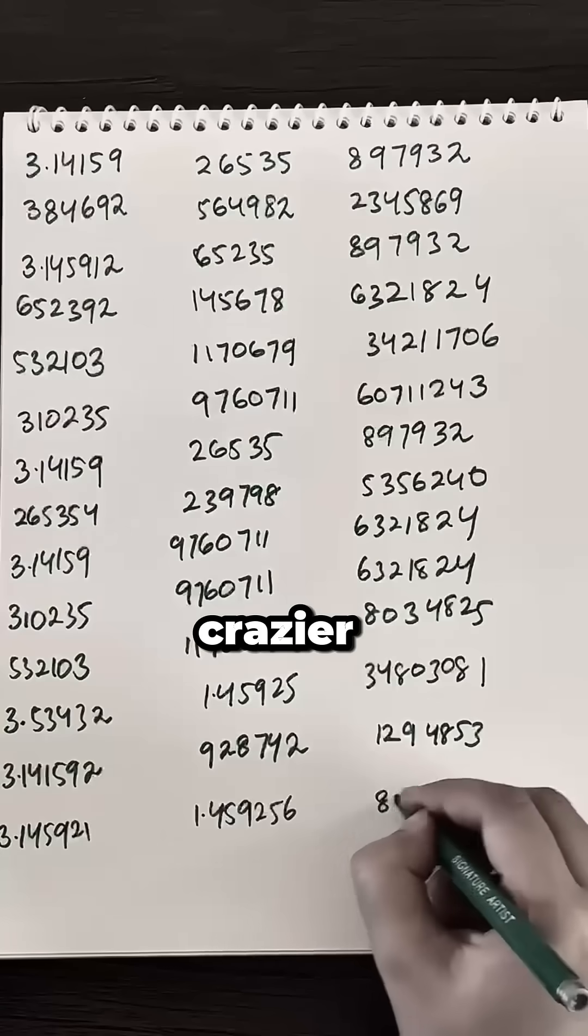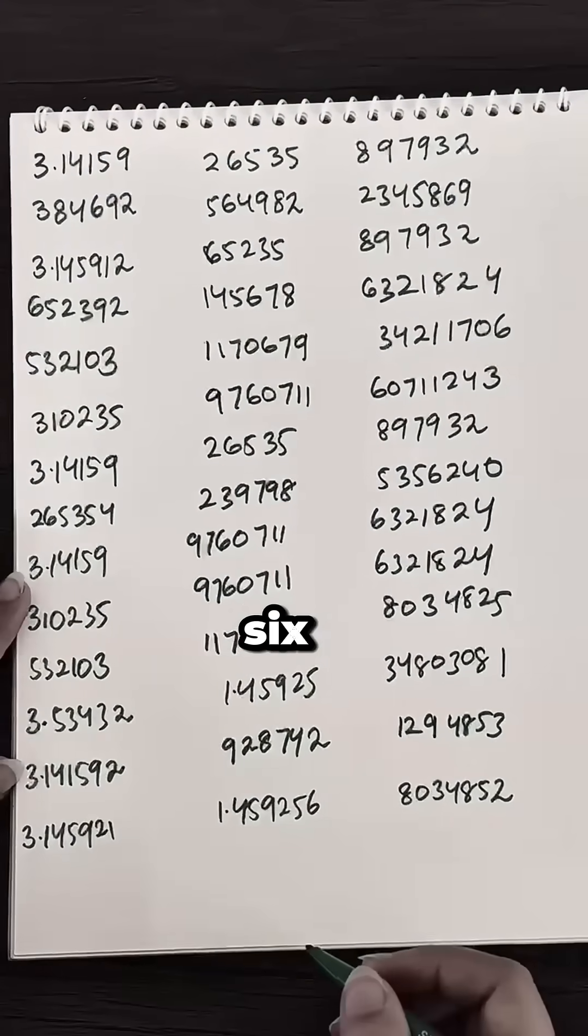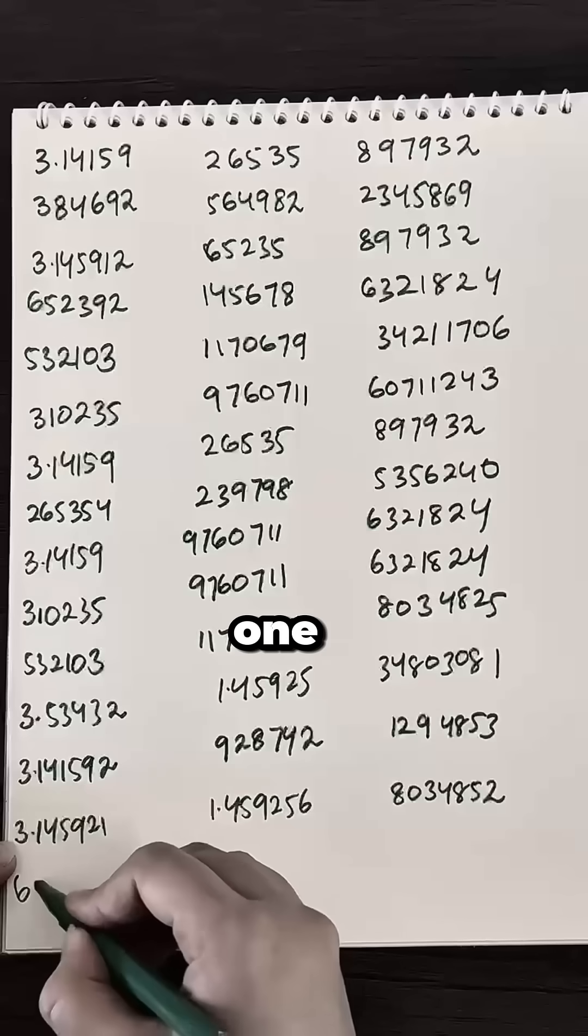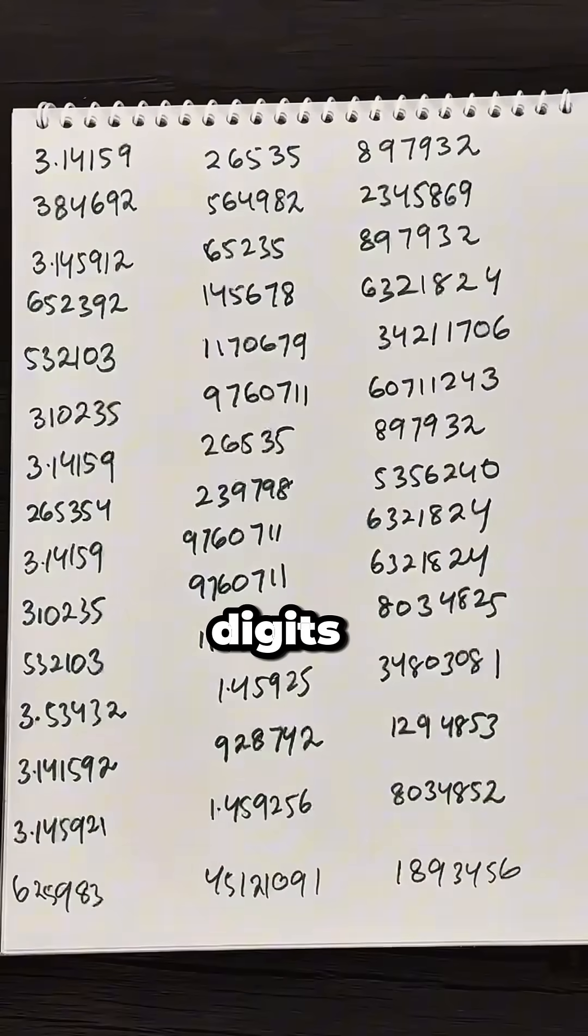And here's what's even crazier. Way further down, at position 24,658,601, there are nine sevens in a row. Just imagine, out of millions of digits, suddenly nine identical numbers pop up. That's the beauty of infinity.